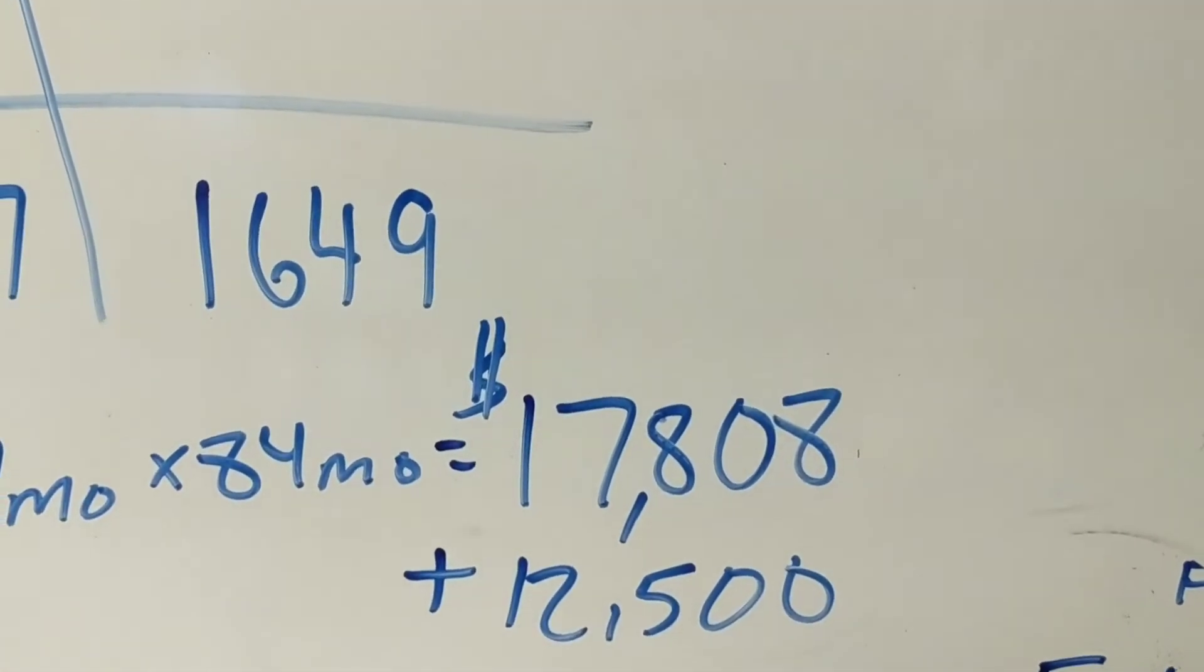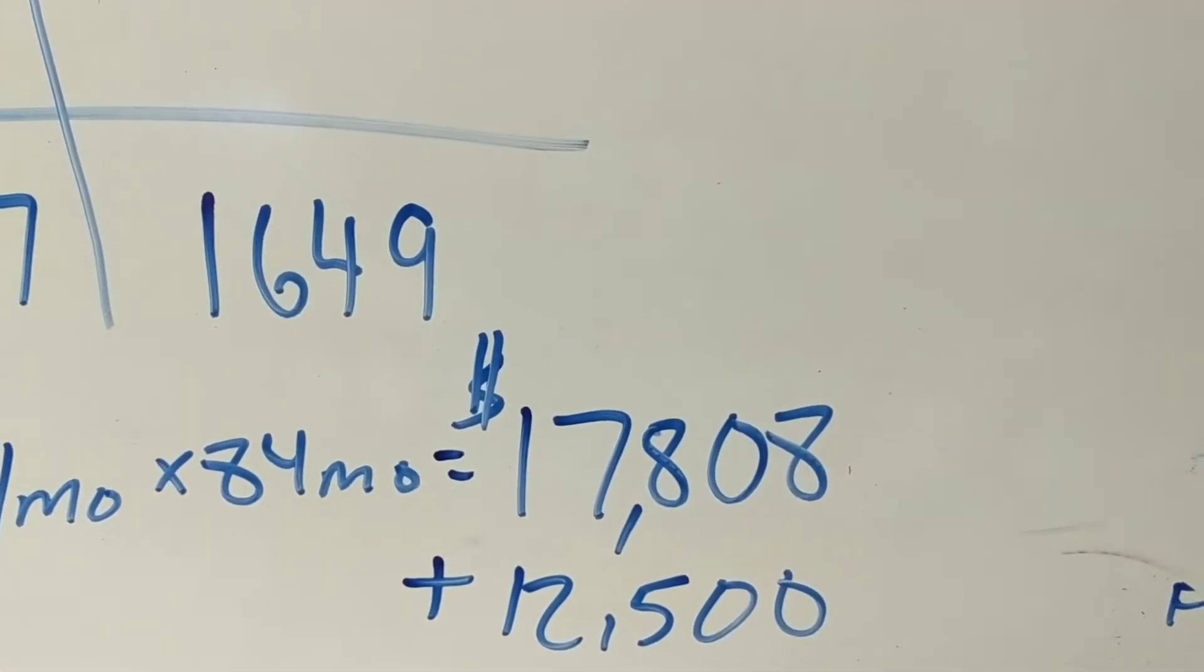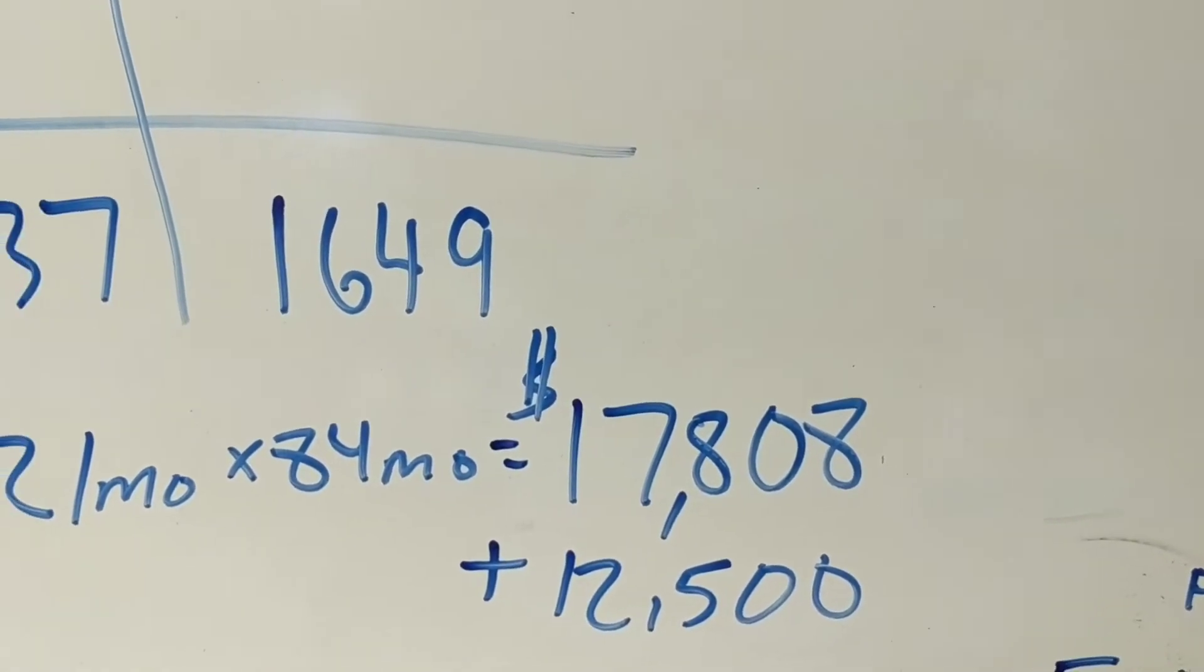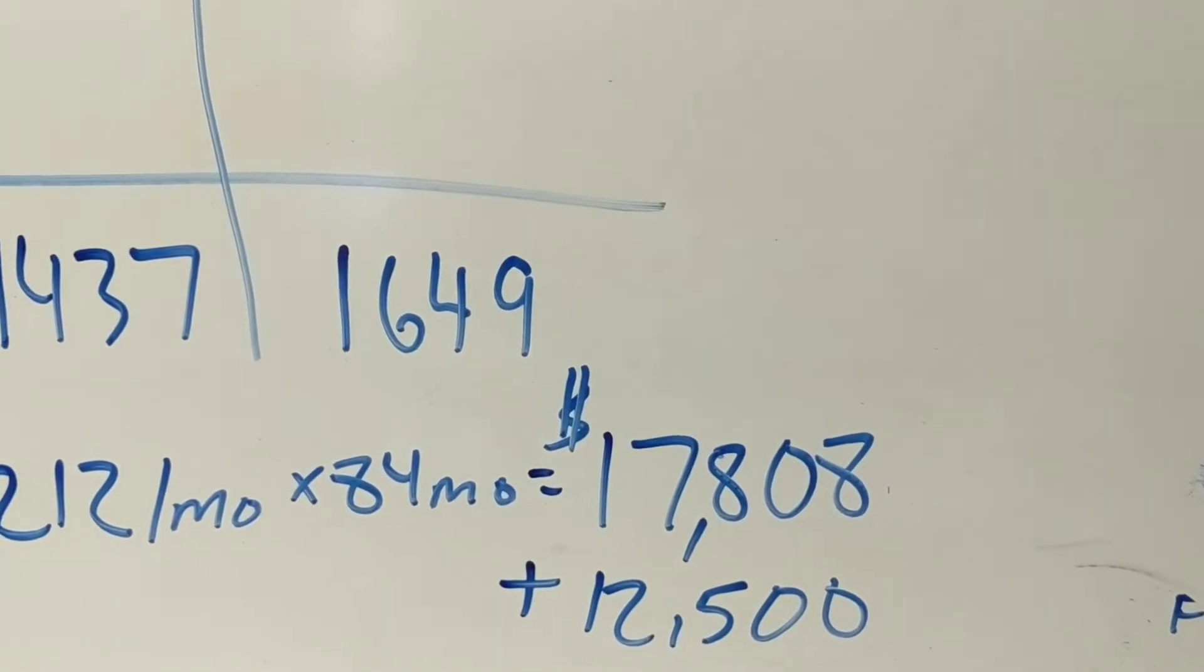So that same house will cost them $18,000 more in mortgage payments over seven years, not to mention they paid an extra $12,500 for the home.